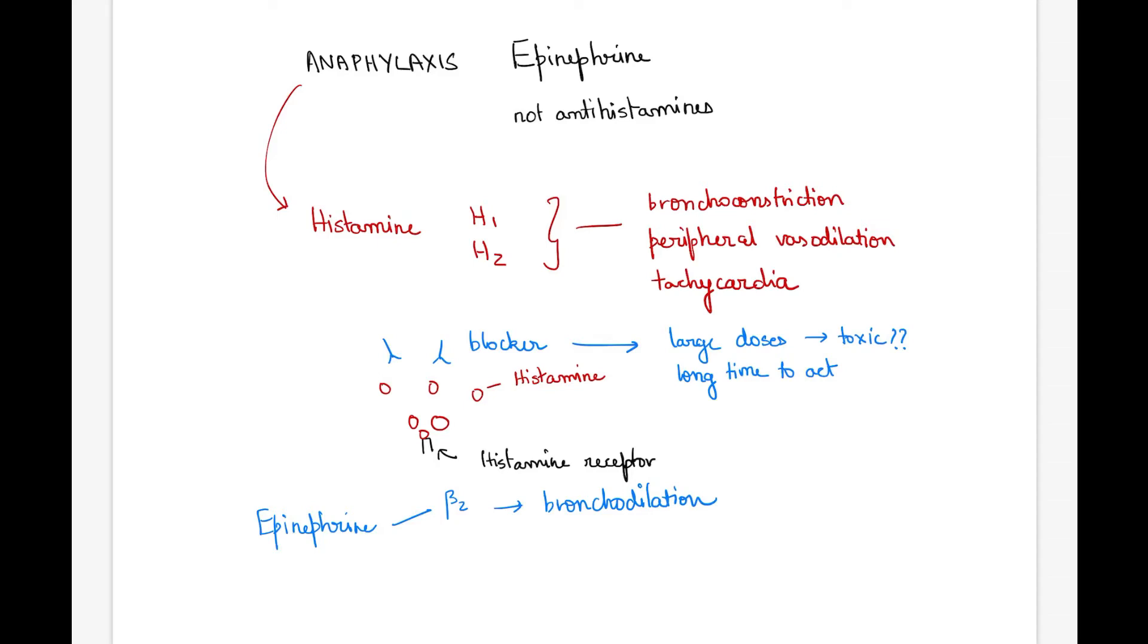Its alpha-1 agonistic action causes peripheral vasoconstriction, moving blood from the peripheral vasculature back into the central circulation. This increases blood pressure and effective circulating volume.